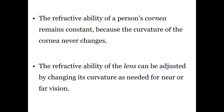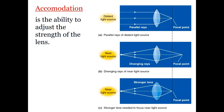There is a difference between the cornea and the lens. The curvature of the cornea remains constant regardless of the distance of the light source — whether near or far, the refractive ability of the cornea doesn't change. But the lens is flexible, and its curvature can be adjusted and changed based on the distance of the light source, so the refractive ability of the lens can be adjusted. The lens is responsible for visual accommodation.